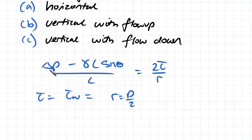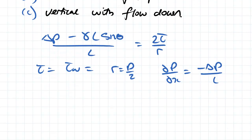We don't actually want the pressure drop per unit length, we want the partial derivative of pressure with respect to x. We know that the partial derivative with respect to x equals negative the pressure drop over L. Making those substitutions, we can rearrange.